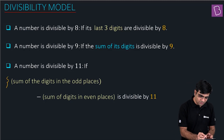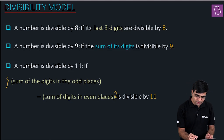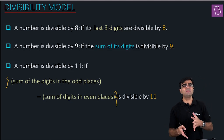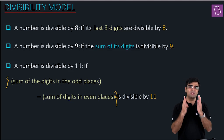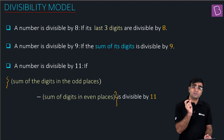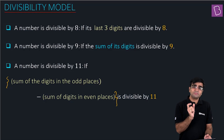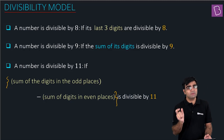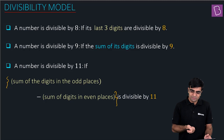Once again, this is a difference — not proper subtraction. In divisibility rules we count the difference. So the sum of digits at odd places and its difference with the sum of digits at even places — if that result is divisible by 11, we say the number is divisible by 11.